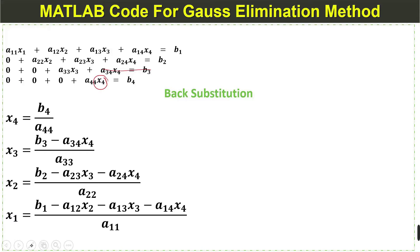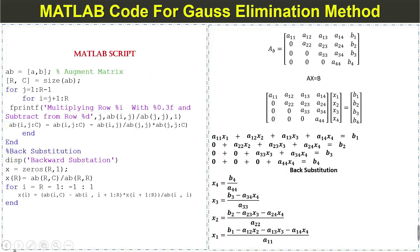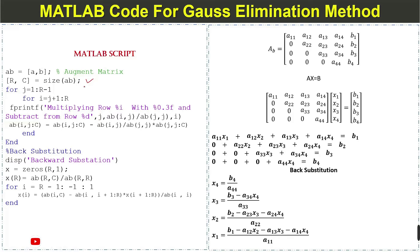Now we write a MATLAB code to verify whether it is working or not. Here we have a MATLAB script for the Gauss elimination method. First we write the augmented matrix to apply the Gauss elimination method. Next we find the number of rows and columns by applying the size command on the augmented matrix.